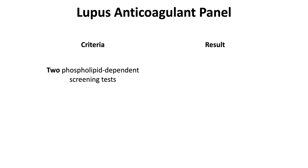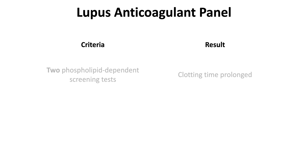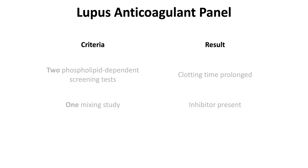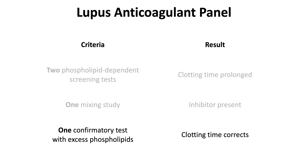Based on ISTH guidelines, we need at least two phospholipid-dependent screening tests, each demonstrating that the clotting time is prolonged. We need at least one mixing study that shows that an inhibitor is present, and at least one confirmatory test showing that the clotting time corrects with excess phospholipids.